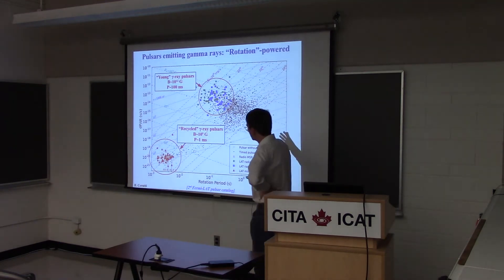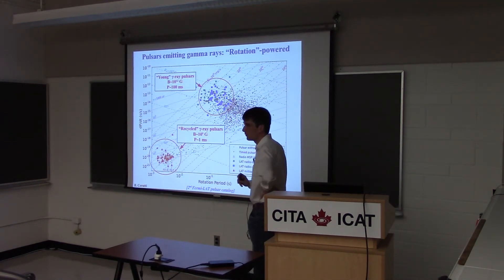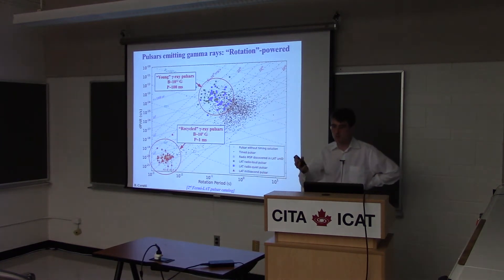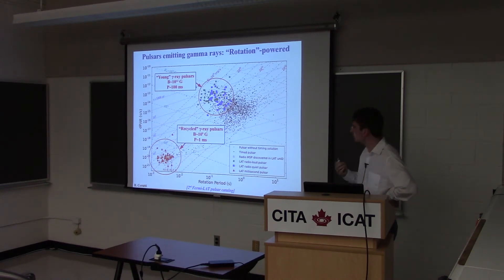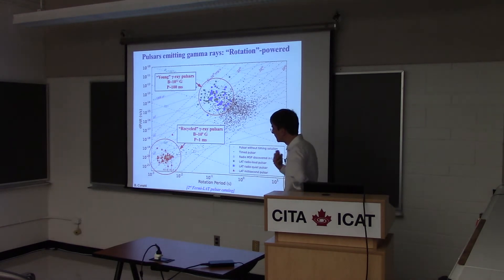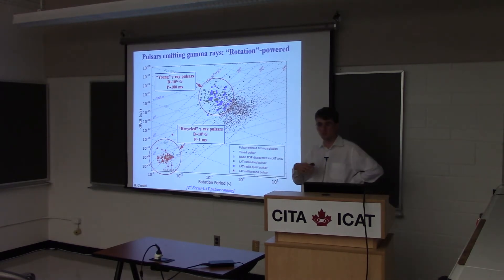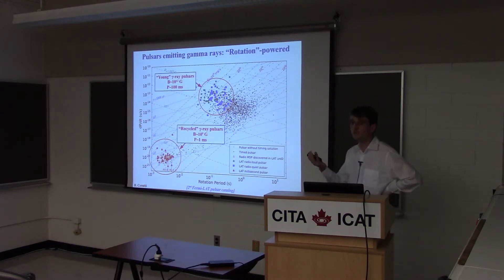The thing in common between these two populations is that the energy released comes from the rotation of the neutron stars — these are truly rotation-powered objects. So eventually, what you observe in terms of radiation will come from the spin-down power, which is the reservoir of energy we have.